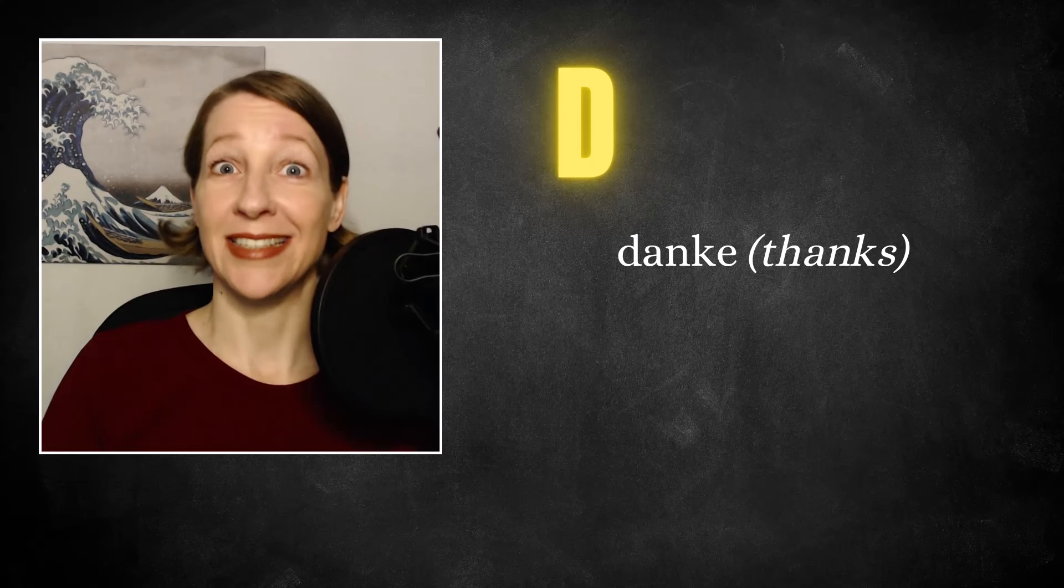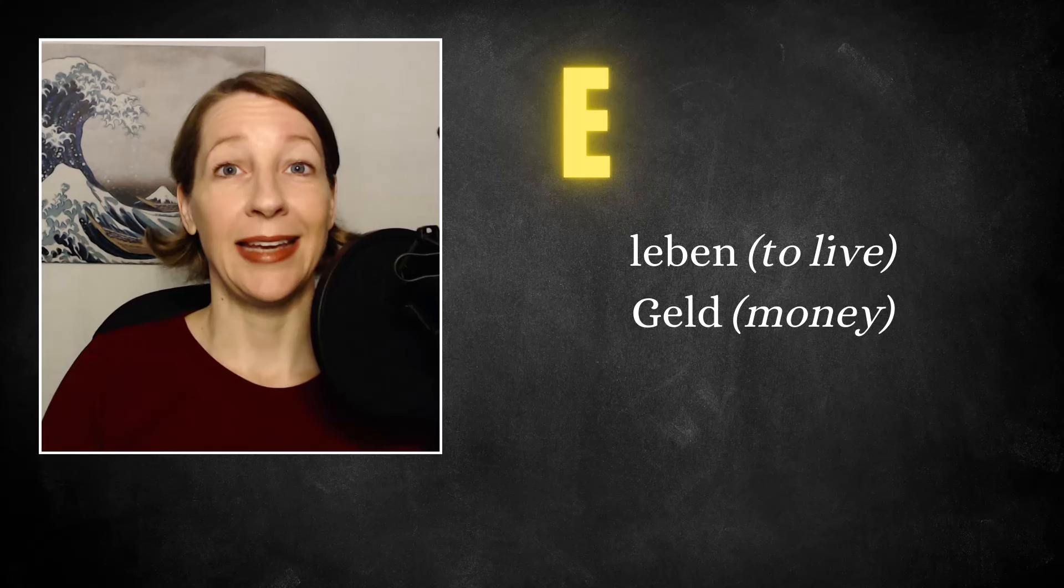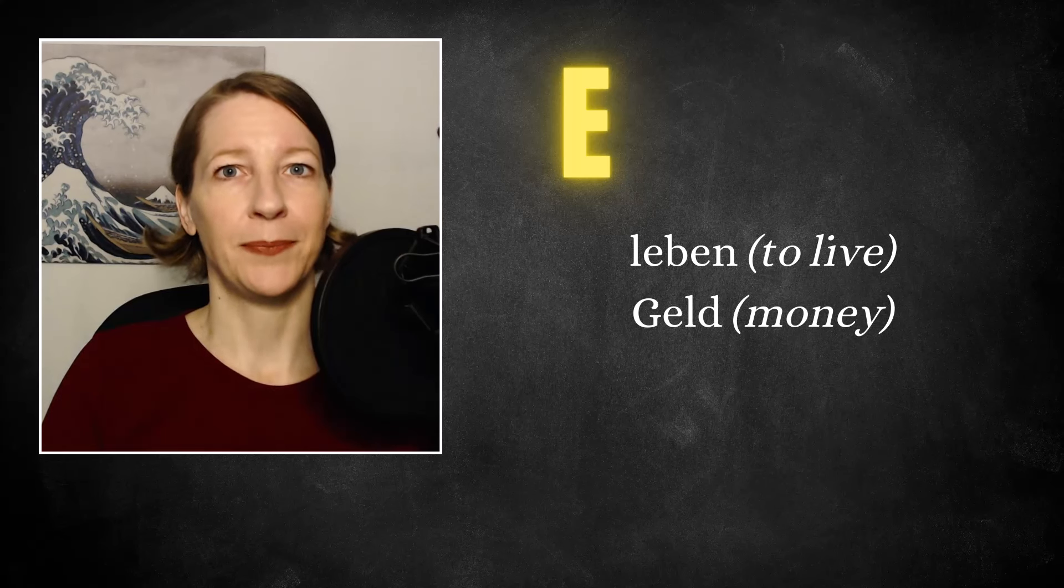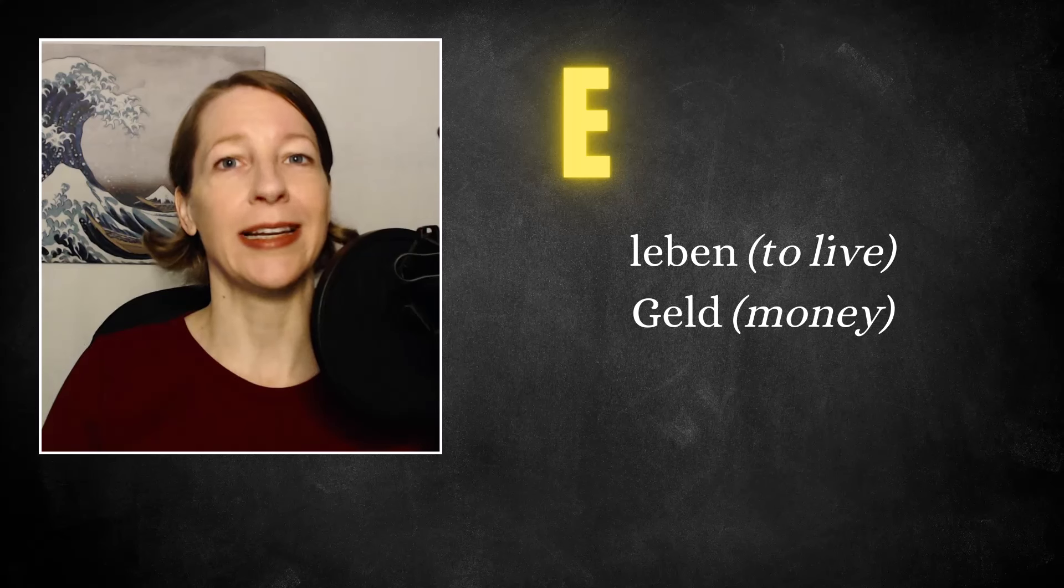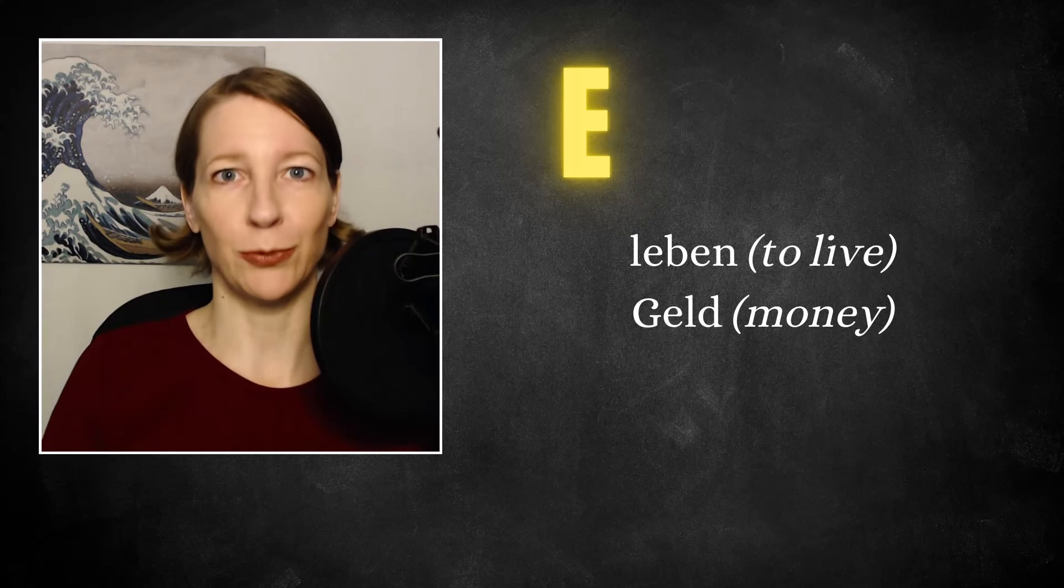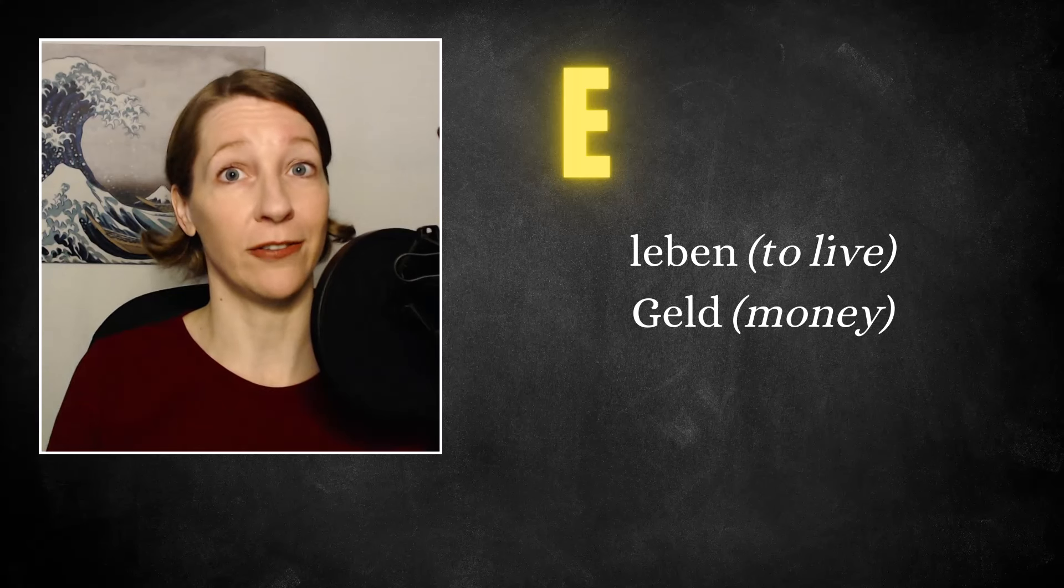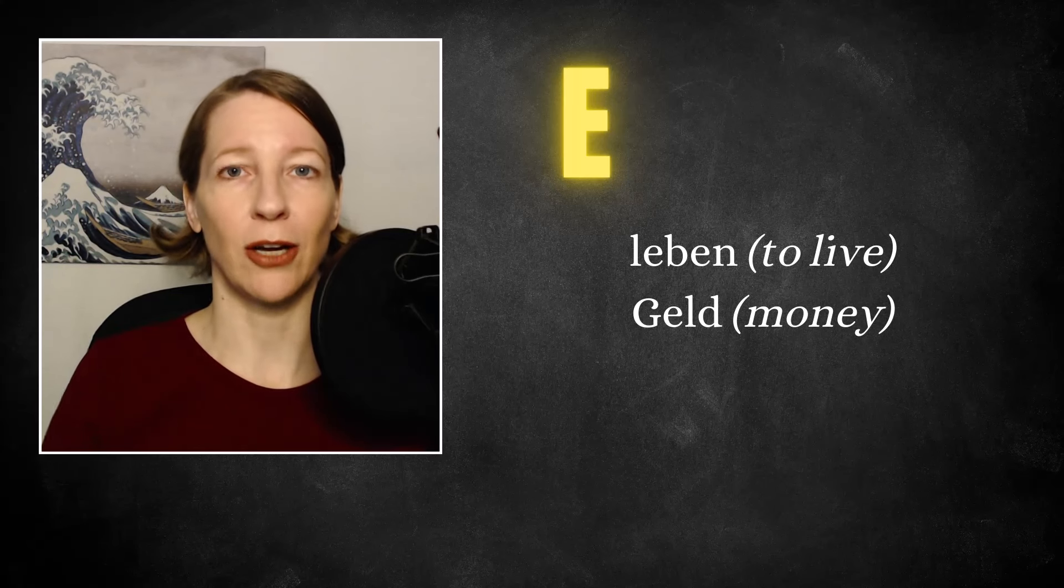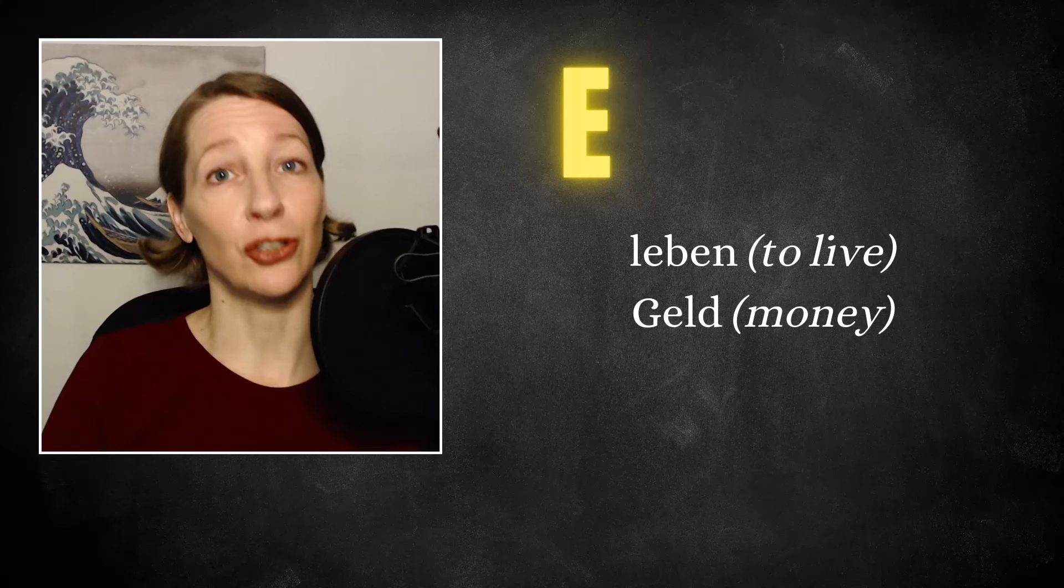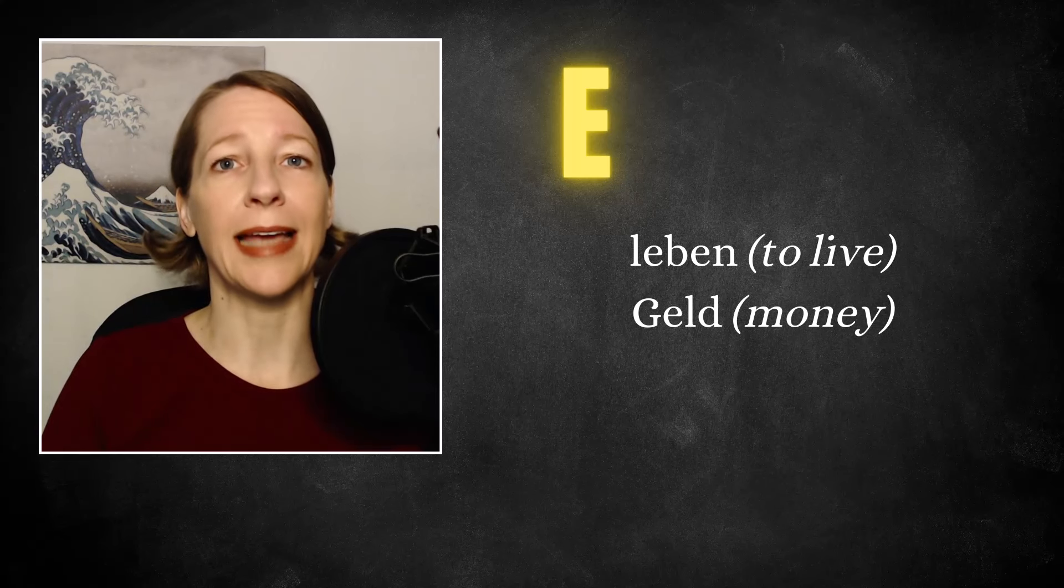D. Danke. E. Leben. Geld. Here you can see again the long closed version Leben is produced by the E followed by a consonant followed by another vowel. If we don't have that combination, it's usually short and more open. Geld.